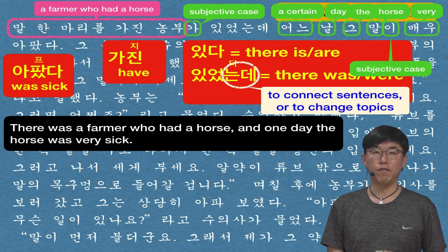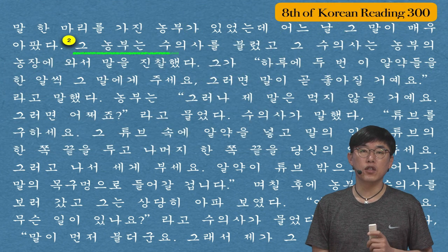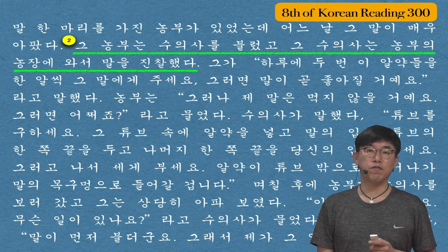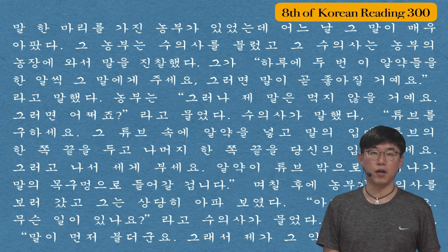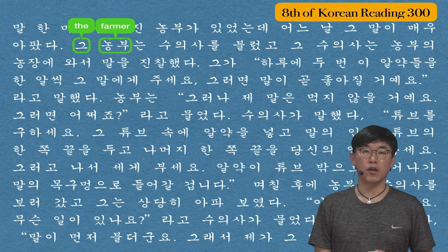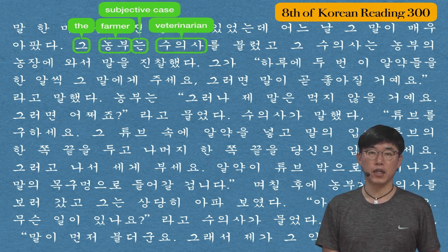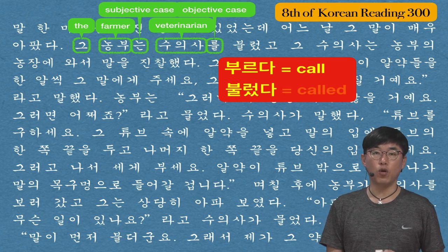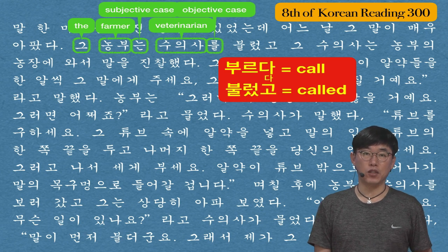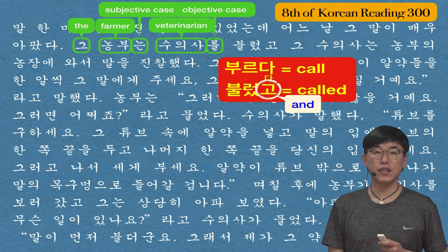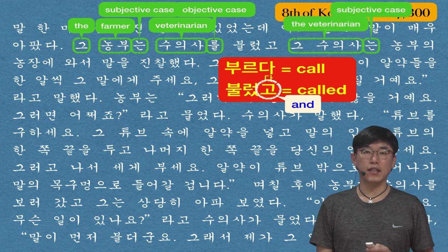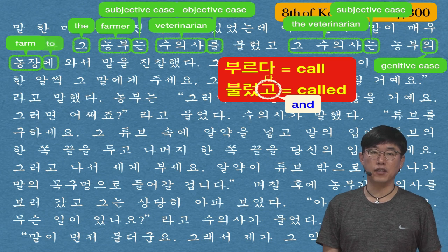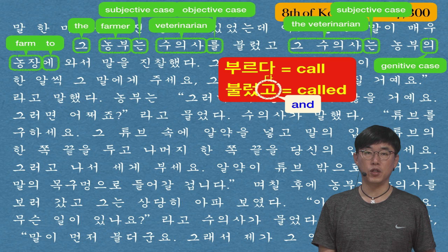The second sentence: 그 농부는 수의사를 불렀고 그 수의사는 농부의 농장에 와서 말을 진찰했다 — The farmer called a veterinarian and the veterinarian came to the farmer's farm and examined the horse. 그 농부 is 'the farmer,' 수의사 is 'veterinarian,' 불렀고 came from 부르다 (to call) — 불렀다 is the past tense form. The 다 is replaced with 고, meaning 'and.' 의 is a genitive case marker, 농장 is 'farm,' 에 means 'to,' so 농부의 농장 is 'the farmer's farm.'